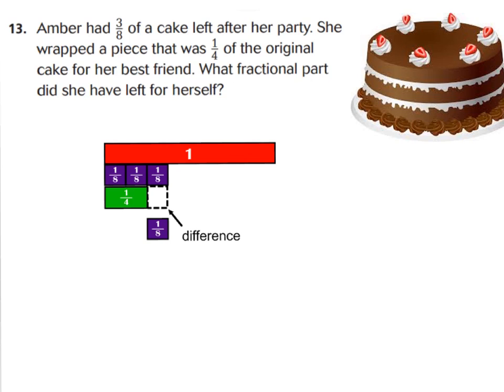All right, let's go down to our problem solving questions. Number 13 says, Amber had 3 eighths of a cake left after her party. Here's our 3 eighths I laid down right here. She wrapped a piece that was 1 fourth of the original cake for her best friend. So, she wrapped 1 fourth of the 3 eighths.